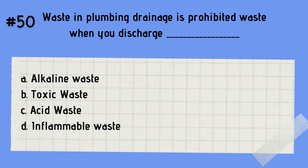Question 50: Waste in plumbing drainage is prohibited waste when you discharge what? A. Alkaline waste. B. Toxic waste. C. Acid waste. D. Inflammable waste. The answer is B — toxic waste. Toxic waste is prohibited to be discharged in a plumbing drainage.